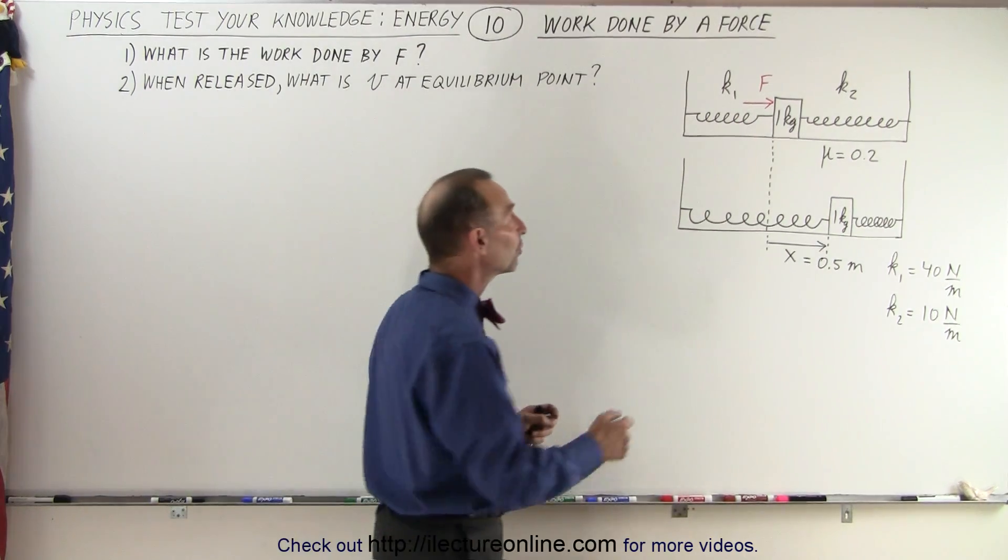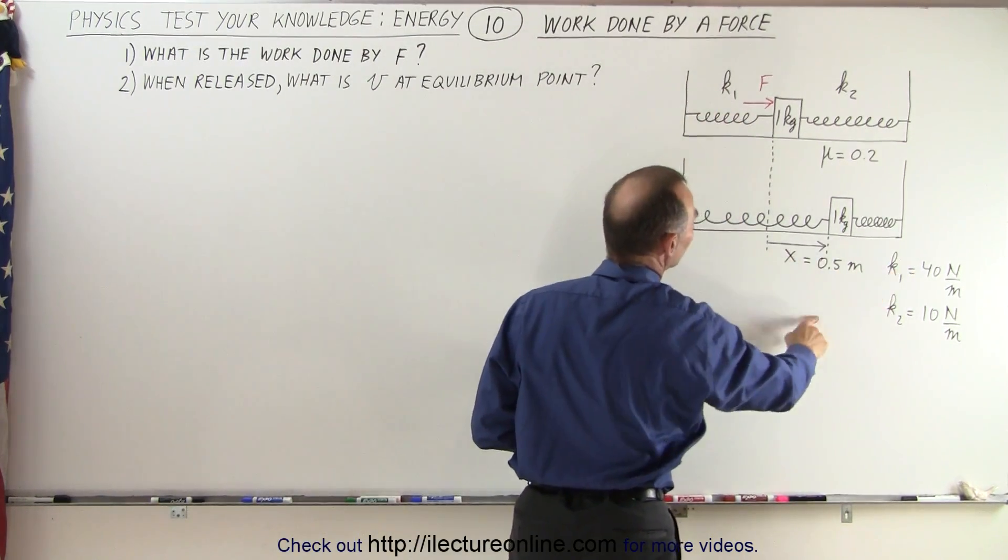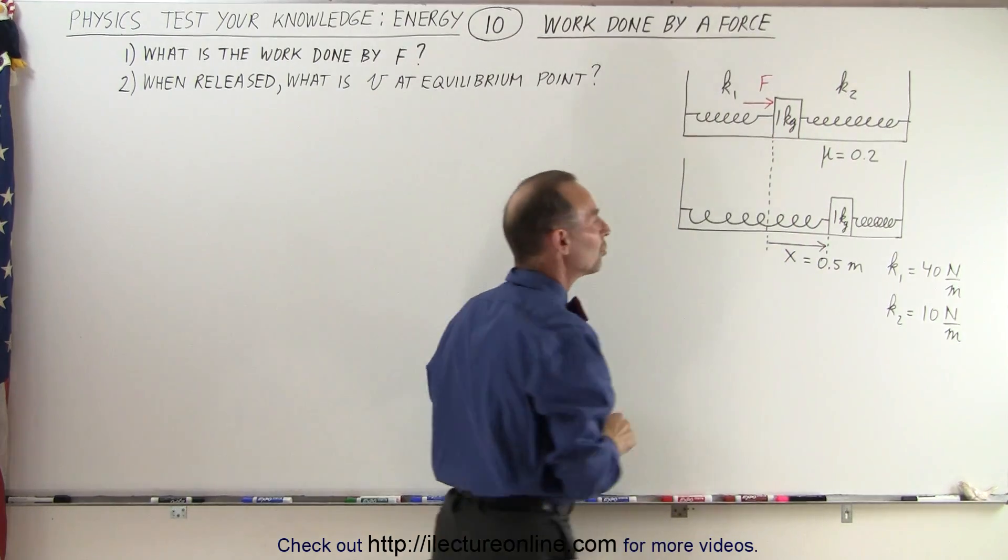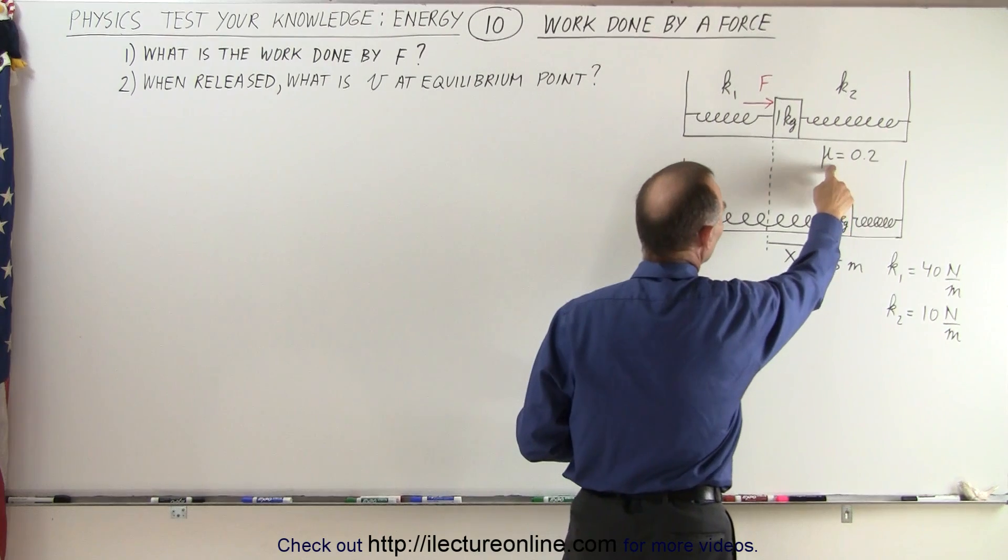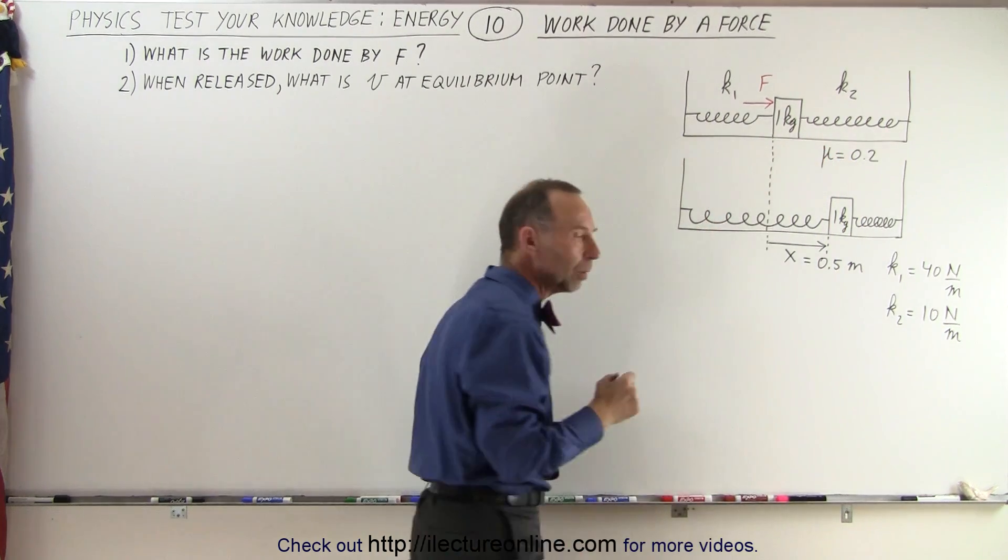We know that the spring constant k1 is equal to 40 newtons per meter and spring constant k2 is equal to 10 newtons per meter, and yes indeed there is a coefficient of friction of 0.2 between the surface and the block.